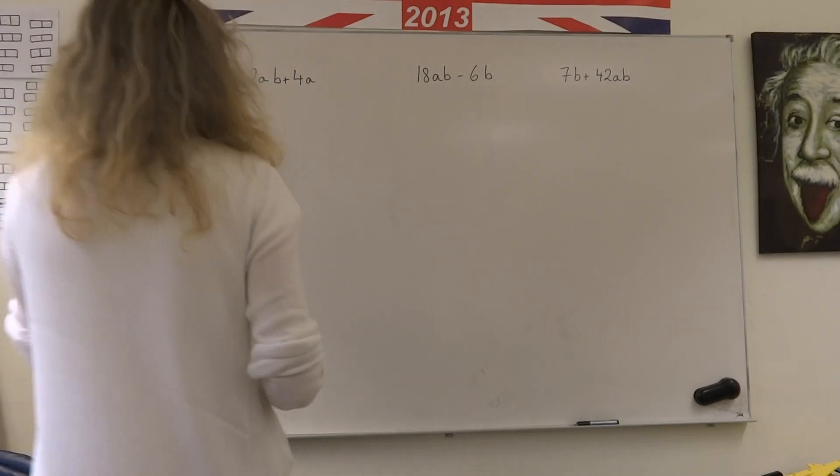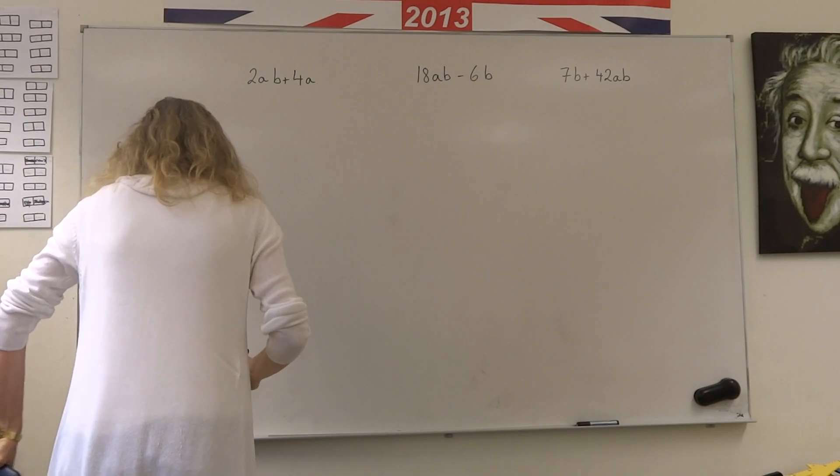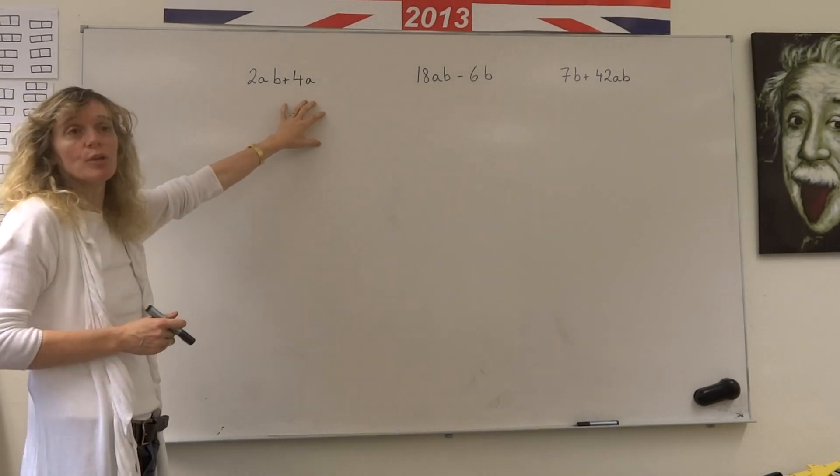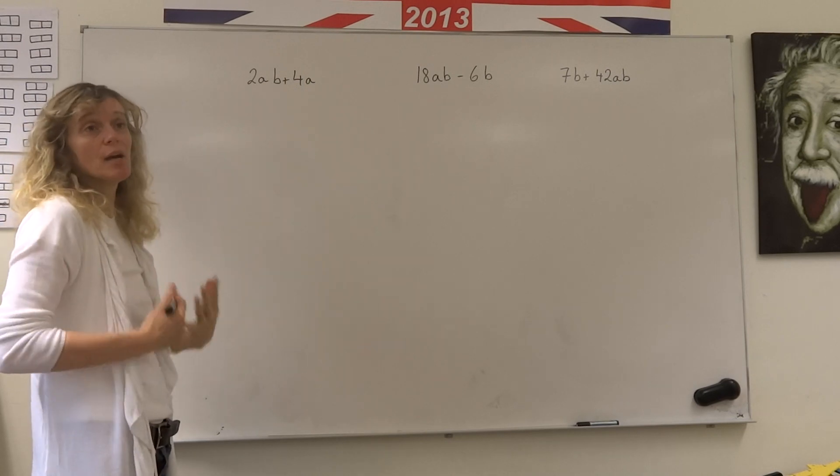Here we have a question about factorising. What you're trying to do when you factorise is you're trying to look for a number that is common to both of these and as high a number as possible.